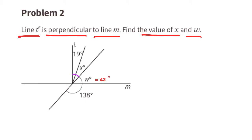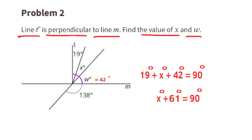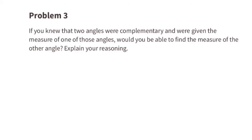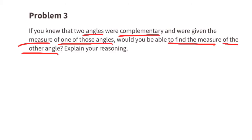Now we need to find the value for x. 19 degrees plus x degrees plus w — or plus 42 degrees — will equal 90 degrees. To solve for x we collect like terms: 19 plus 42 equals 61. Next we subtract 61 from both sides of the equal sign, and we have x equals 29 degrees.